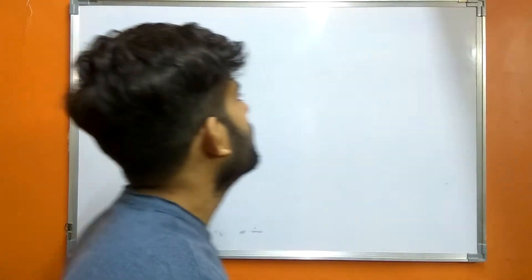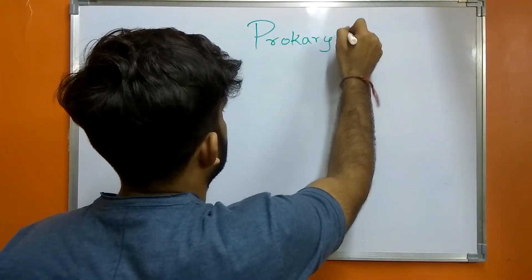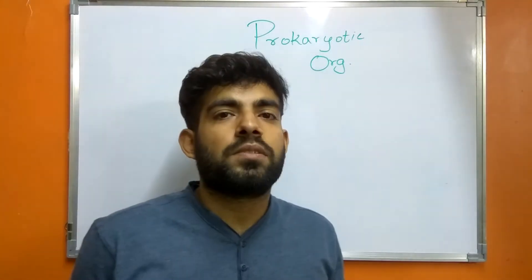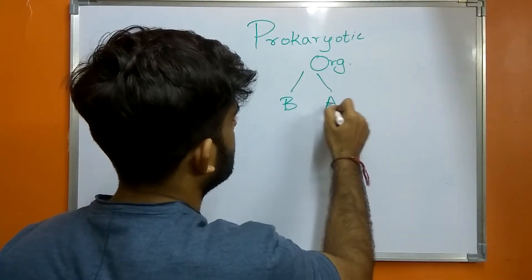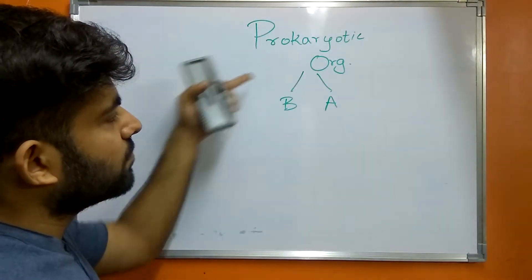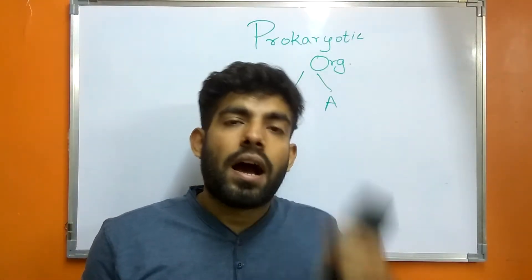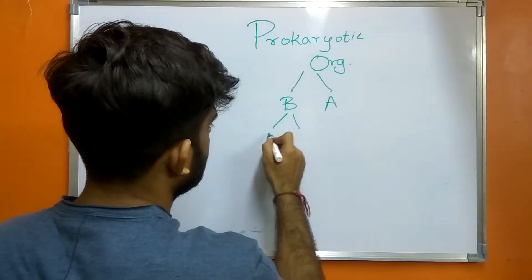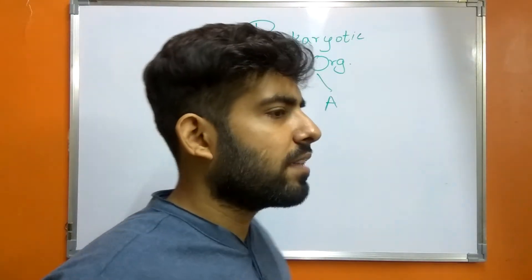Hello everyone, I am Sagar Banushali and I am going to talk about the prokaryotic type of cells. These prokaryotic organisms are the ancient type of organisms. This group mainly consists of bacteria and archaea. The major proportion of these organisms consists mainly of bacteria, which when compared with eukaryotic organisms are mainly simple and small unicellular organisms.